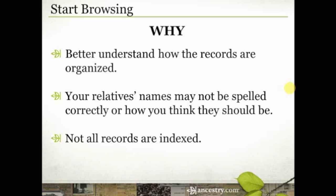The big reason we're going to talk about today for why browsing is important is that not all records are indexed. On Ancestry.com, we put records up as quickly as we can — we digitize those images, sometimes from microfilm, sometimes original copies of records, sometimes those records come to us already digitized. Indexing those records — meaning having somebody go through and type in every name, date, and location off of a particular record so that you can search for them — is a very costly and very time-intensive process. Rather than hold on to these records until we can get them through that process, Ancestry.com has made a decision to just put these records online now so that you can access them even if they're not searchable. These are records that will never surface in a search because there is no index that has been created yet.